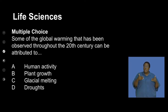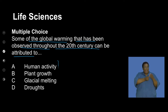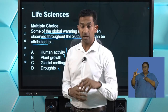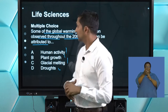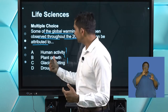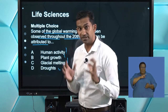We start with a brain teaser. The question is: some of the global warming observed throughout the 20th century can be attributed to which of the following? A — human impact; B — plant growth; C — glacier melting; or D — droughts. Through this lesson, we're going to unpack what global warming is and reflect on which of these has been a significant contributor.